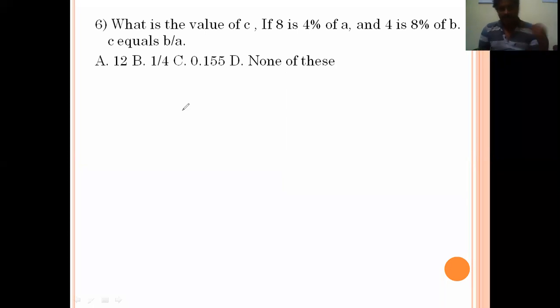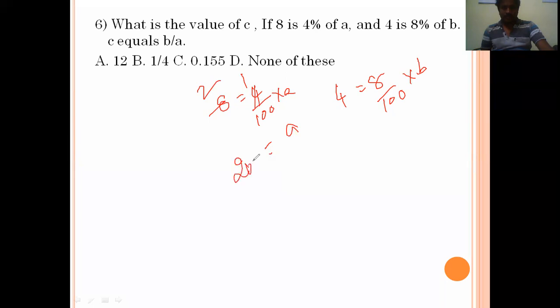What is the value of C? If 8 is 4% of A and 4 is 8% of B, C equals B by A. 8 equals 4 by 100 times A. 4 equals 8 by 100 times B. Simplifying: A equals 200. B equals 50. Now C equals B by A, which is 50 by 200, equals 0.25. Option B is the right answer.